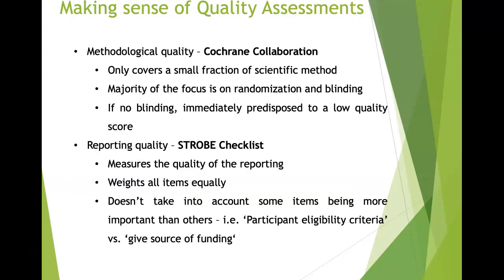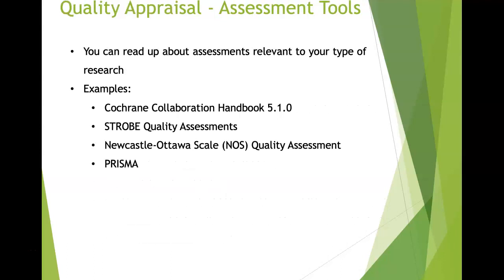In the sciences, a typical tool for methodological quality is the Cochrane Collaboration, which has its own strengths and weaknesses. For reporting quality, the STROBE checklist is often used, with its own advantages and disadvantages. You need to find out what tools are best for your particular study.